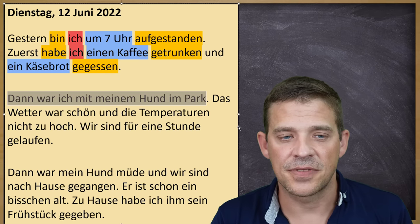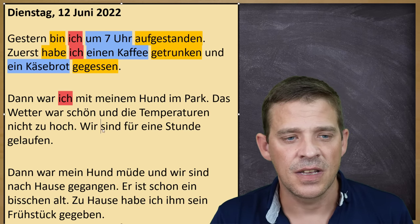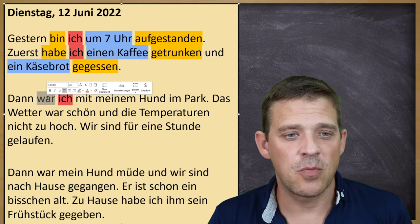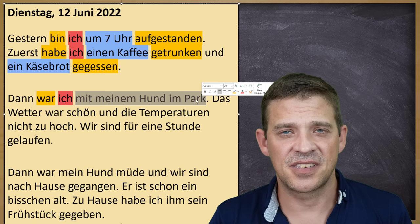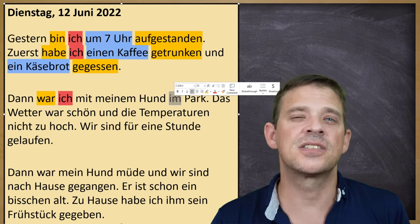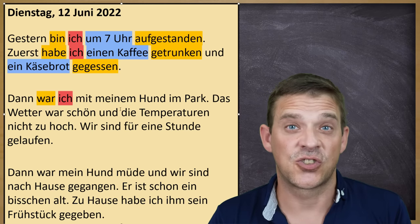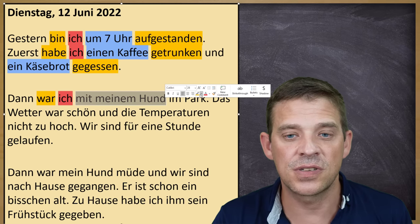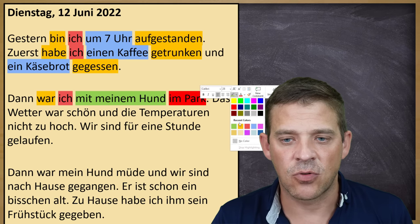Dann war ich mit meinem Hund im Park — Then I was with my dog in the park. Ich is das Subjekt. The verb is war — simple past, Präteritum. Here we have two prepositions: mit, which always requires dative, and im, which is in plus dem. So we have two objects with two cases. The preposition gives you the case — always look at the preposition. Mit meinem Hund ist ein Dativ-Objekt. Im Park — im is in dem — also dative. Both go in green.